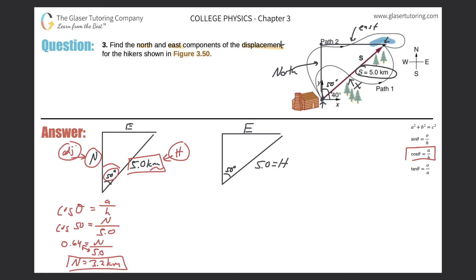So now I need to think of a formula that relates an angle to the opposite side of the triangle and the hypotenuse. What formula over on the right hand side might do that? Looks like the sine formula. So let's write that down: sine of theta is equal to the opposite side over the hypotenuse. So sine of 50 is going to equal the eastern component divided by the hypotenuse of 5.0.